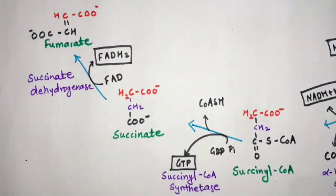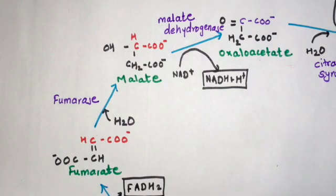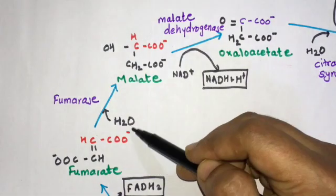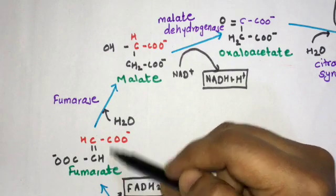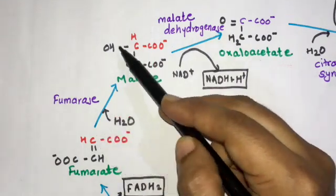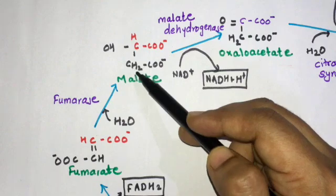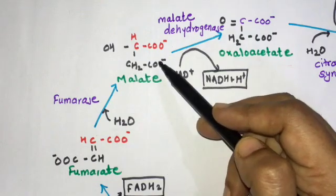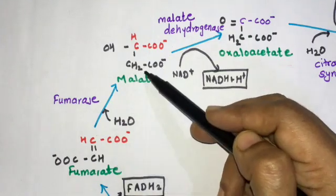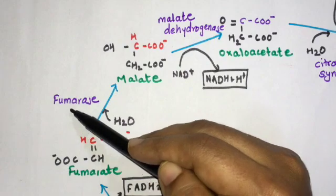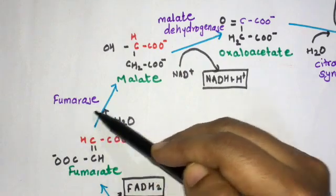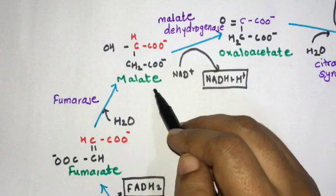The seventh step is a hydration reaction — addition of a water molecule. When water is added to fumarate, an OH and an H are added to the structure, converting fumarate to malate. This reaction takes place with the help of fumarase enzyme.